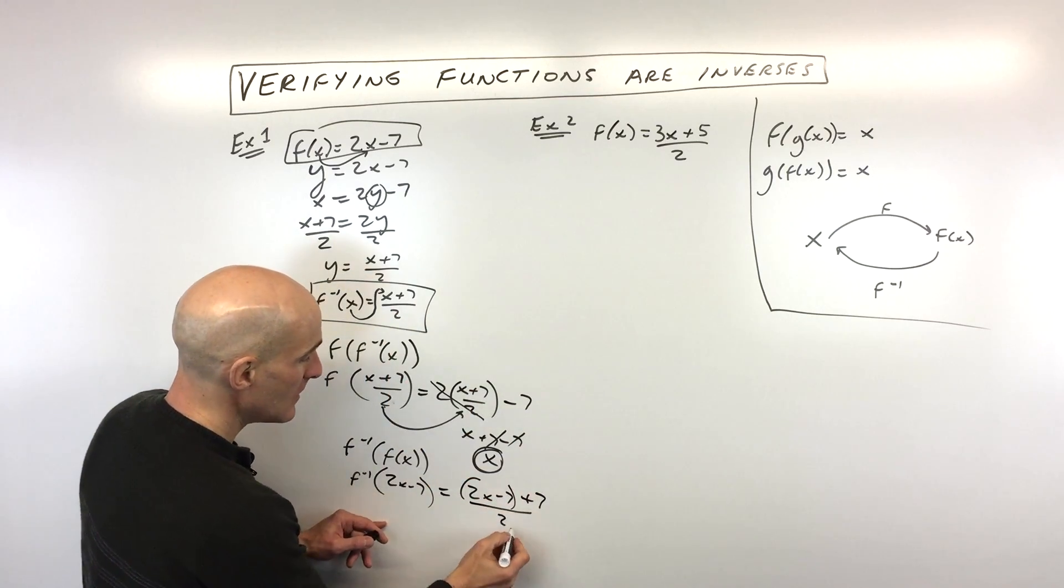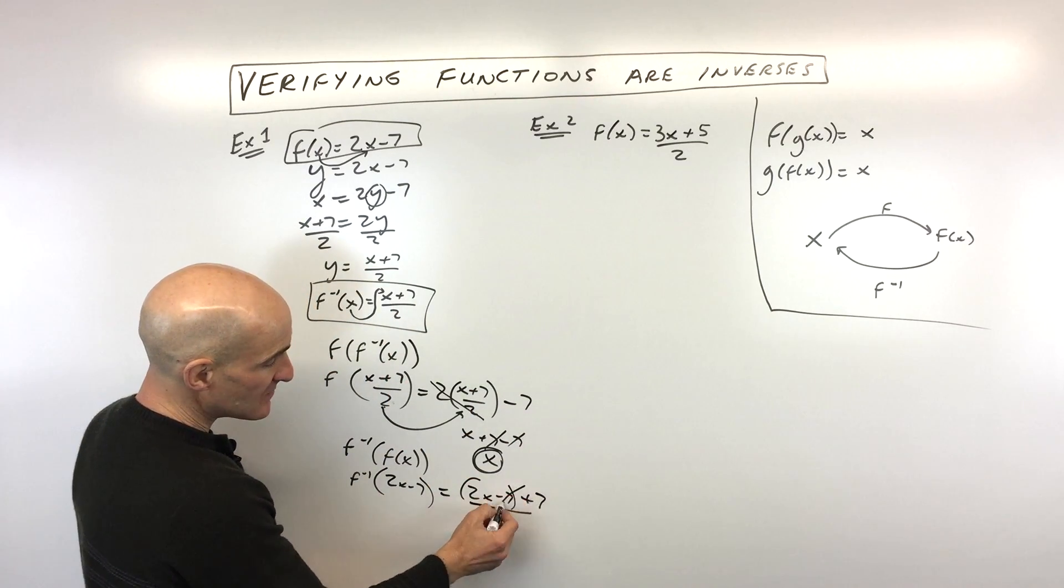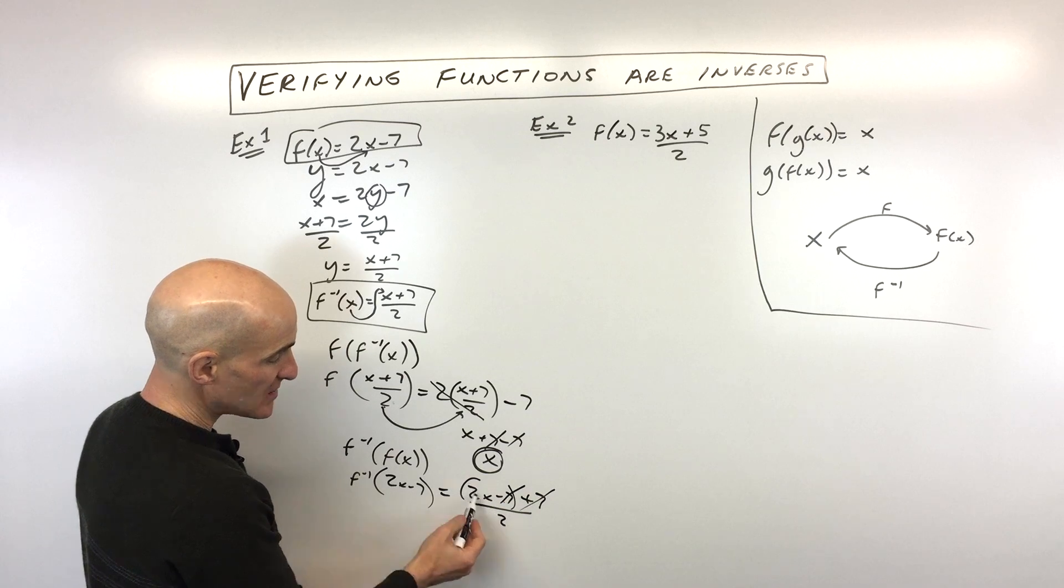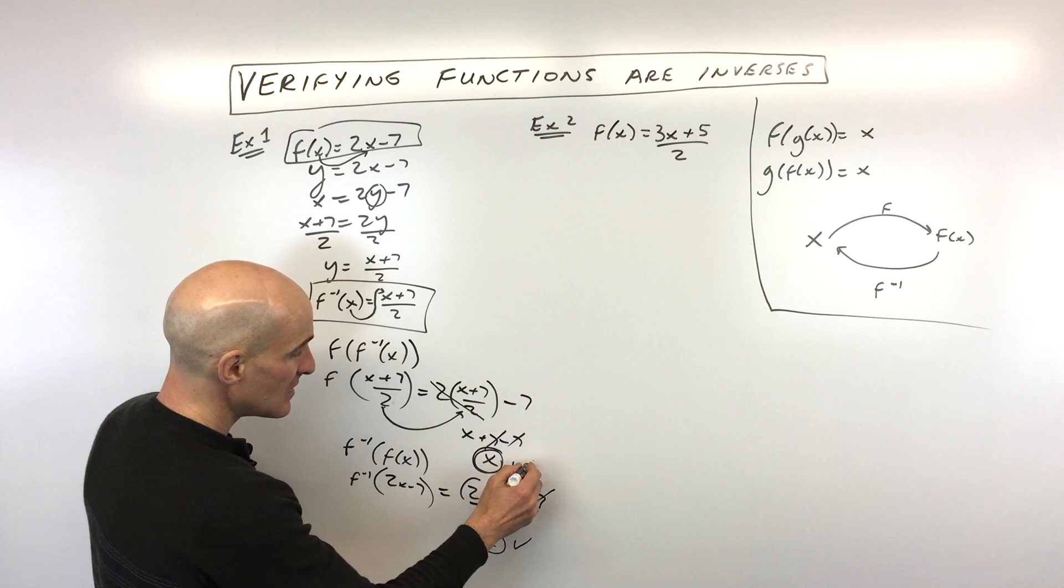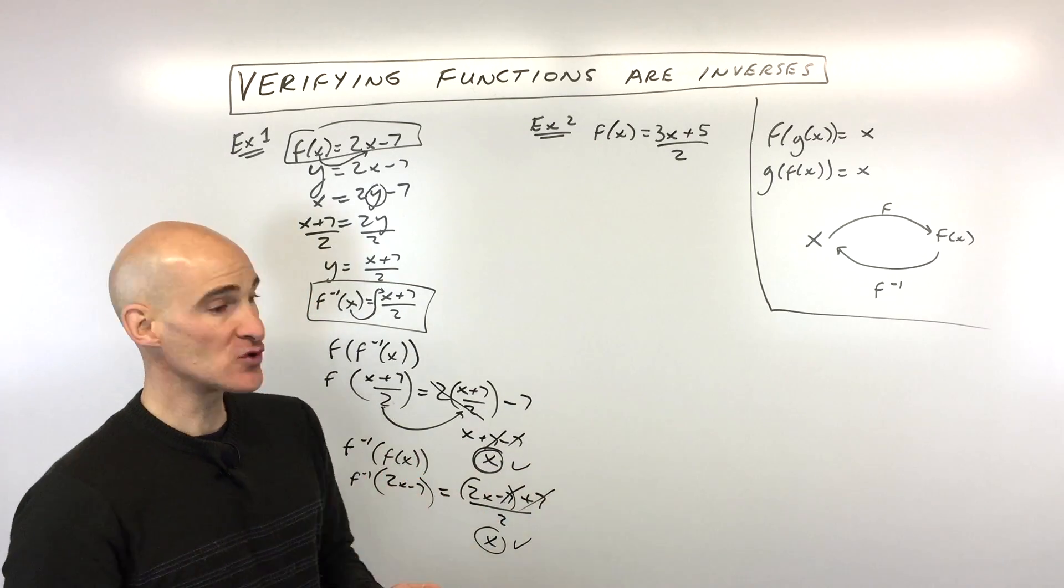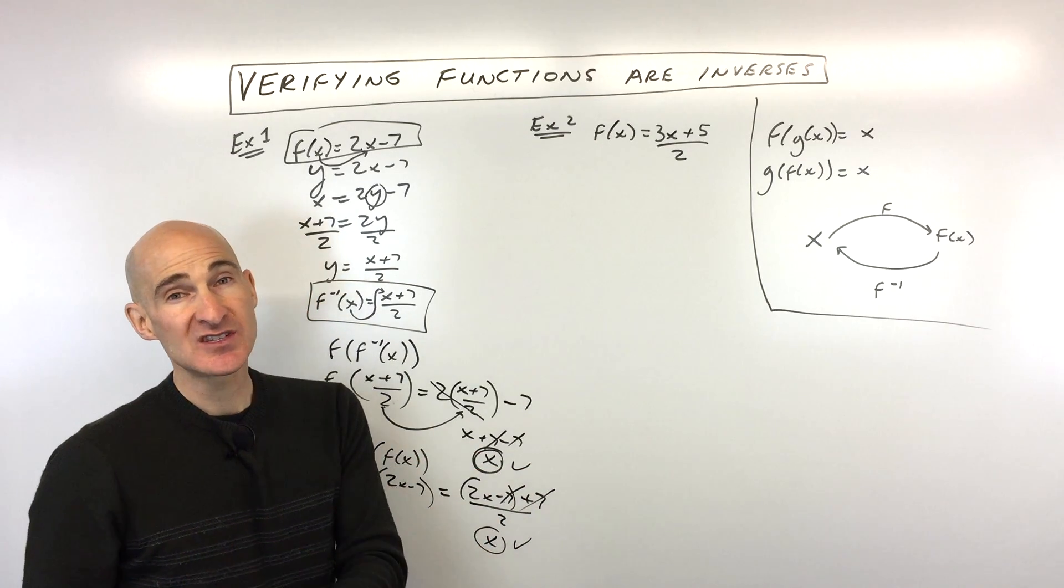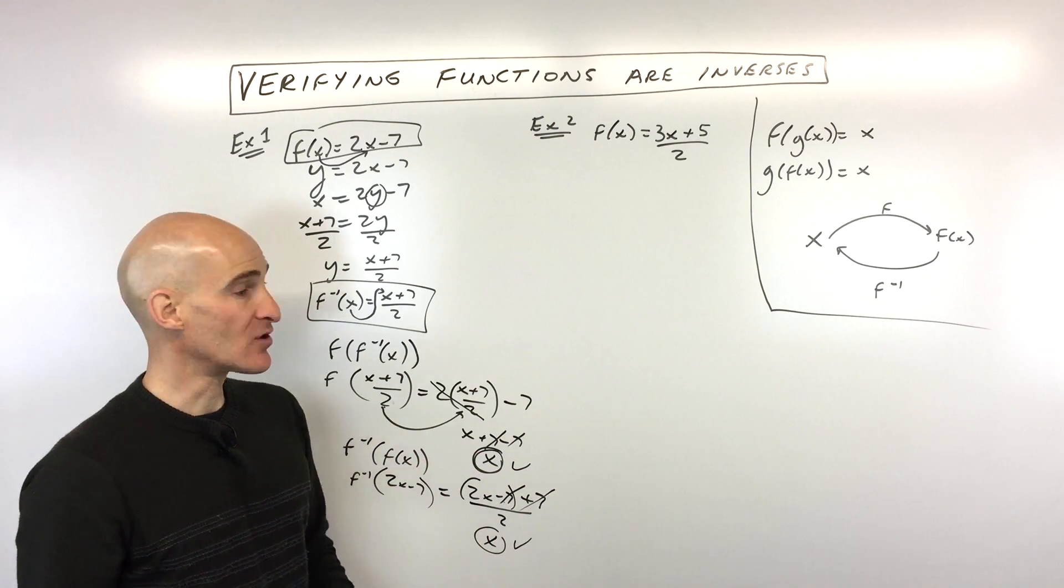Well, you can see negative seven and positive seven, those are canceling. Two X divided by two, the twos are going to cancel, and you're just left with X. So you can see when we compose it in both orders, we got X for both, and you've successfully proved or verified that those functions are inverses.